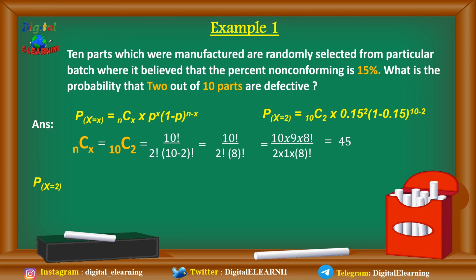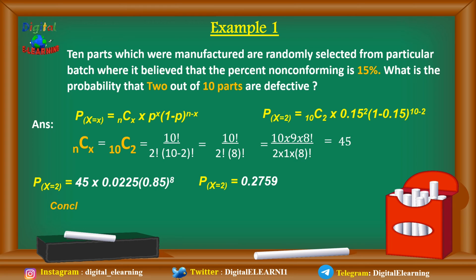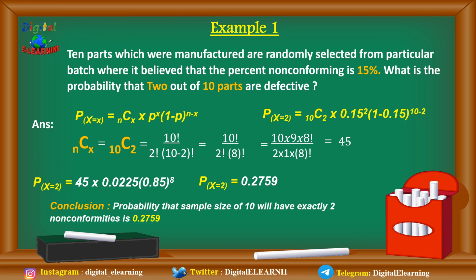Now we put the value 45 into the formula for P(x = 2): 45 × (0.15)² × (0.85)⁸ = 45 × 0.0225 × 0.272 ≈ 0.2759. The conclusion is that the probability that the sample of 10 will have exactly 2 non-conforming parts is 0.2759, or 27.59 percent.